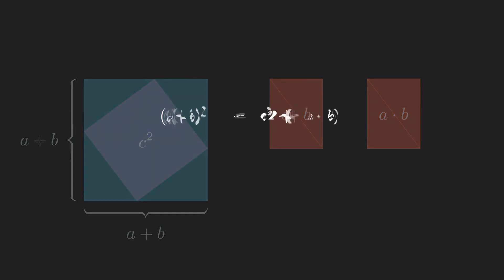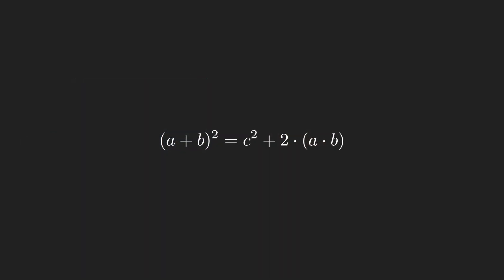Now, let's see what we can do with our new formula. First, let's multiply out the bracket on the left hand side. Now, subtract like terms. And we have Pythagoras' theorem: A squared plus B squared equals C squared.